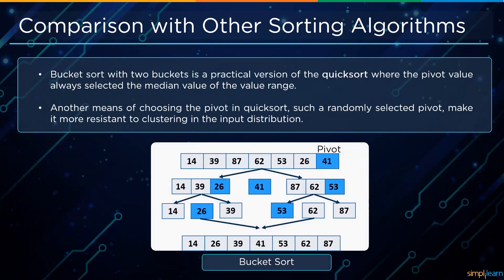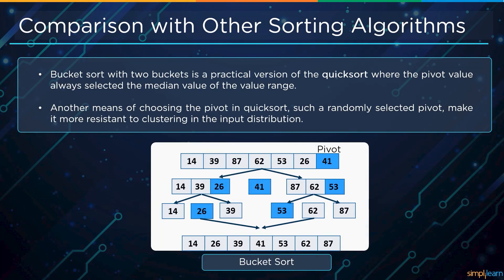Compared to quick sort, bucket sort with two buckets is a practical version of quick sort where the pivot always selects the median value of the value range. Choosing the pivot in quick sort differently — such as a randomly selected pivot — makes it more resistant to clustering in the input distribution.